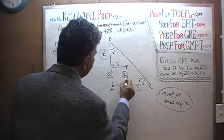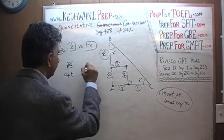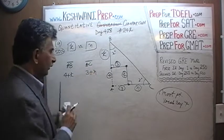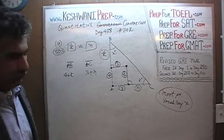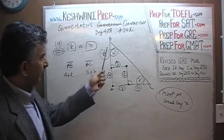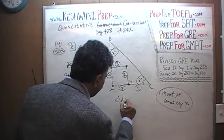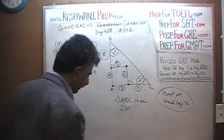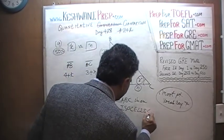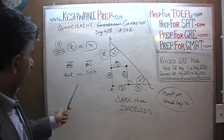Similarly, from here to here we are told is 3, which means this side is also 3, so A to C is going to be 3 plus N. You must also notice that we are told these angles are equal — X degrees and X degrees. If angle ABC is X degrees and angle ACB is X degrees, that means triangle ABC is an isosceles triangle, which means these two side lengths are equal. But that is not what they want you to compare — they want you to compare K versus N.